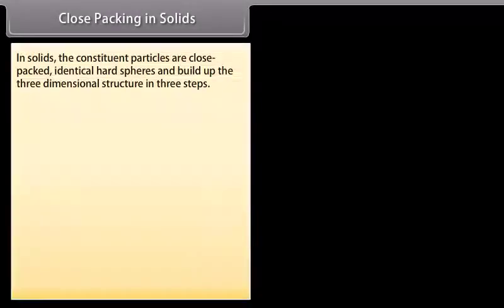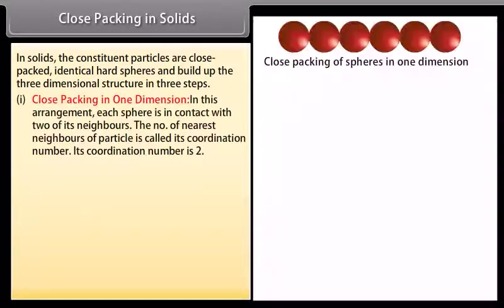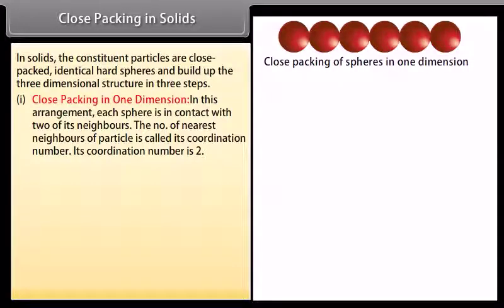In solids the constituent particles are close packed as identical hard spheres, and the three dimensional structure is built up in three steps. In close packing in one dimension, each sphere is in contact with two of its neighbors. The number of nearest neighbors of a particle is called its coordination number; here the coordination number is 2.